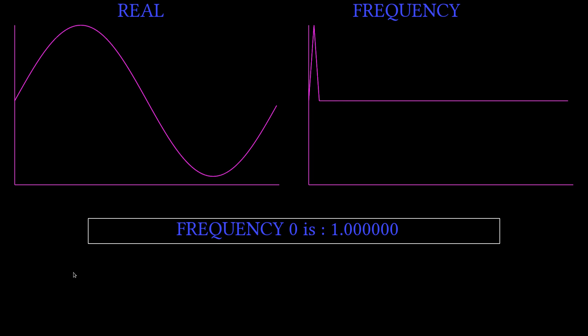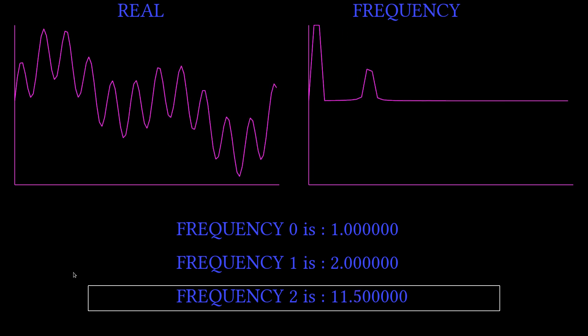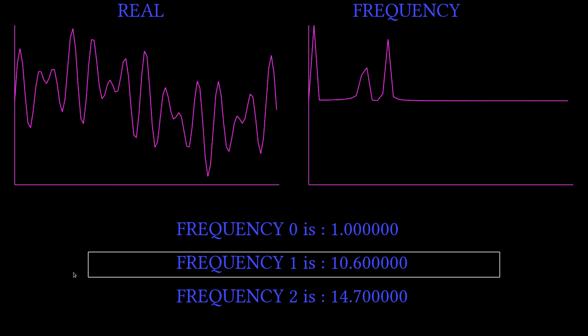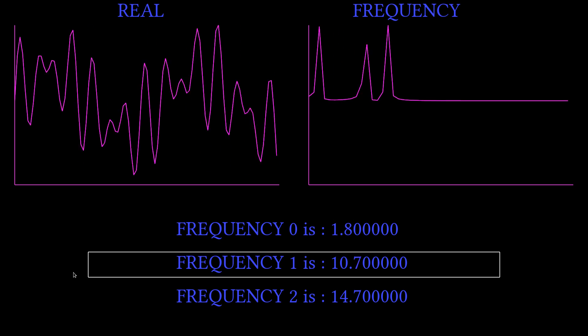Now, what happens when we start introducing more sine waves? Well, the image in real space becomes incredibly complicated, but the frequency space image doesn't really change that much. Instead of one peak related to one wave, we now see three different distinct peaks for each individual wave in real space.